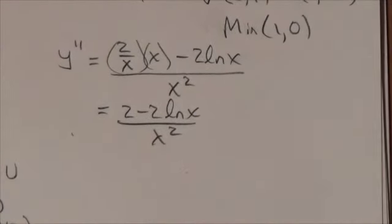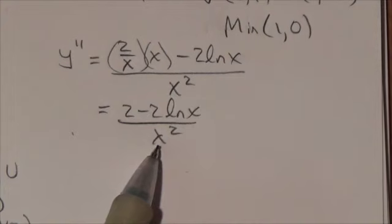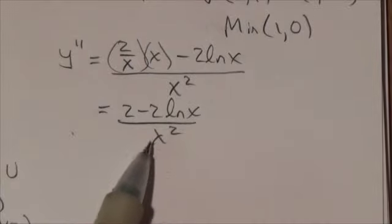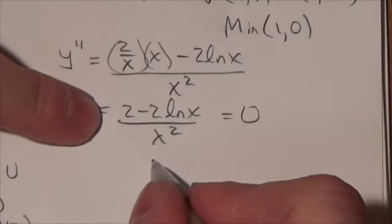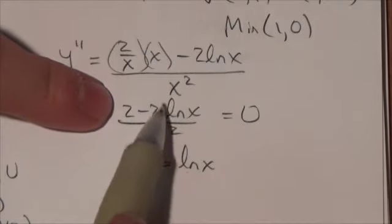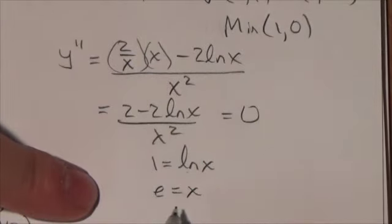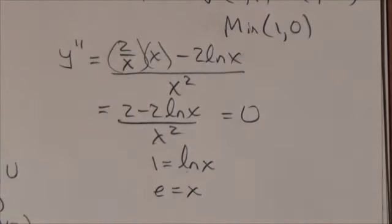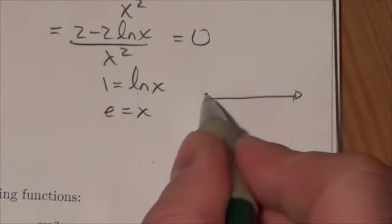Now, once again, when we're looking for points of inflection, we are looking for where this thing is either equal to 0 or undefined. But it's going to be undefined at 0, and again, 0 is not part of the domain of the function here. What I'm interested in is where it's equal to 0, and that is going to be when the natural log is equal to 1. Just think about that, 2 minus 2 equals 0 here. Convert forms here, and I'm going to get e is equal to x. So I'm going to get a point of inflection when e is equal to x, and that's going to be where the concavity is going to change here.